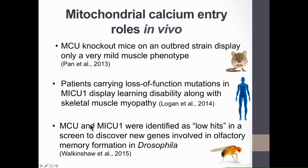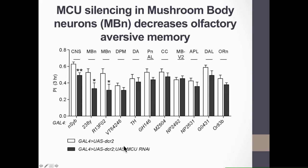We decided to investigate the hypothesis that mitochondrial calcium entry is important for olfactory memory in Drosophila. We started by asking in which specific neuronal population, among those important for learning, memory, and olfaction, MCU is required. We performed olfactory aversive conditioning experiments, training flies to associate an odor with an electric shock, and then tested memory by inserting them in a T-maze. Memory is quantified by a performance index (PI), where a PI of 1 means all flies avoid the odor-associated arm, and a PI of 0 means they distribute randomly between the two arms.